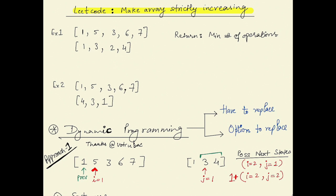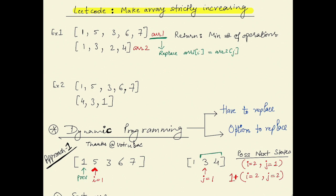In this problem we are given two arrays, array1 and array2. The goal is to make all elements in array1 strictly increasing. To do that, we can replace any element of array1 with some element in array2, and this replacement counts as one operation. We need to find the minimum number of such operations to make array1 strictly increasing, or return -1 if it's not possible.